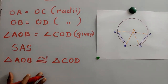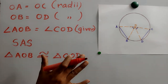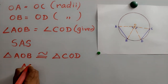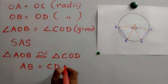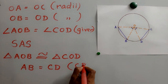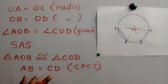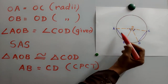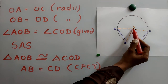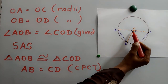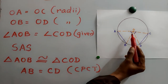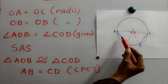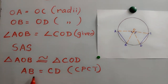These two triangles are congruent, and all the corresponding parts are equal. The corresponding parts AB and CD are equal. So the two chords AB and CD are equal in length.